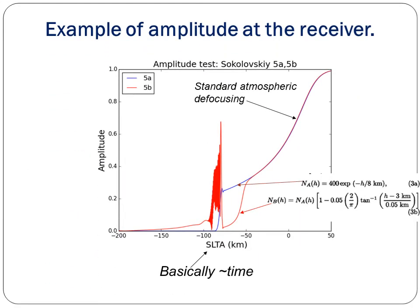An example of amplitude at the receiver shows amplitude versus SLTA, which is approximately a time measurement in kilometers. You can see the atmospheric defocusing, which varies from approximately minus 200 to 50. The amplitude variation is shown through phi_A and phi_B time series.